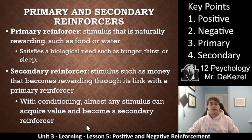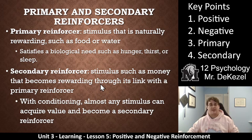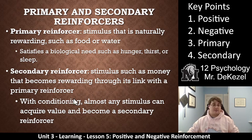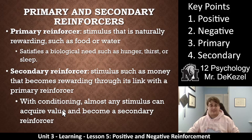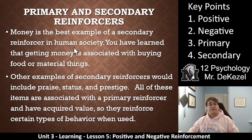But you can use secondary reinforcers for humans in most situations. These would be things such as money — rewarded through a link with food, shelter, or entertainment. So money can get you all those things, which is why we refer to it as a secondary reinforcer. It's not something biologically necessary, but it's something good, and we know it's good because we've been conditioned. Almost any stimulus can acquire value and become a secondary reinforcer — money is really just pieces of paper or metal that have value because we say they do. We have conditioned or learned or linked the value with these things. Money is the best example of a secondary reinforcer in human society.